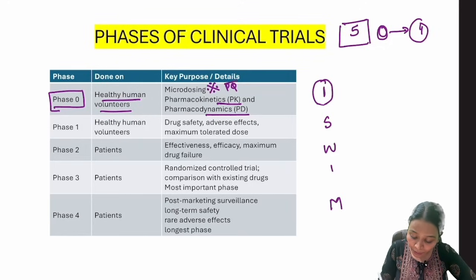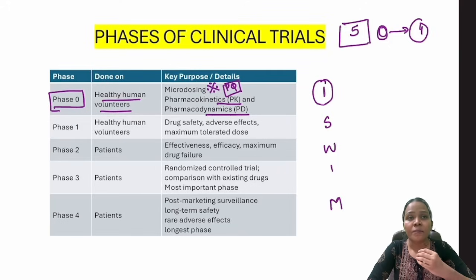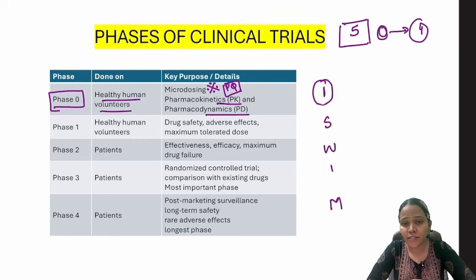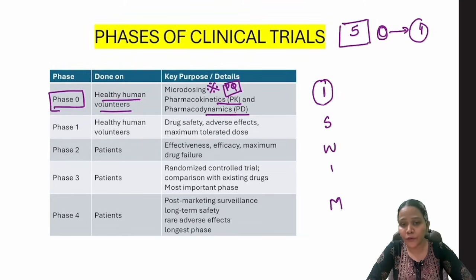Micro dosing is done in Phase 0. Why can't we give a full dose? Because some drugs cause irreversible suppression of breathing centers — for example, benzodiazepines. If we gave 20 mg of diazepam at once, the person could get respiratory arrest. Since we don't know what dose will work, we give small doses like 1 mg or 0.5 mg and assess pharmacokinetics, pharmacodynamics, and side effects.